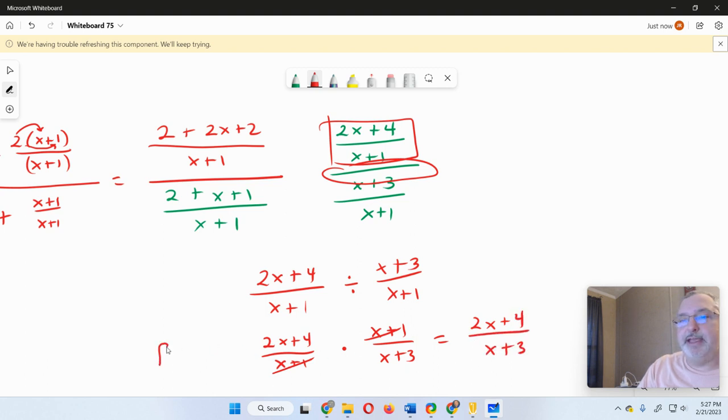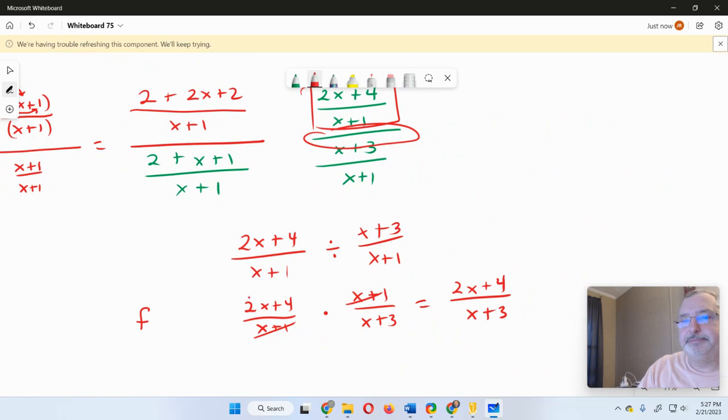Leaving me with 2x plus 4 over x plus 3. And that's going to be my f of g of x. And then we'll have to say that our domain is x cannot equal negative 3. It also cannot equal negative 1. Because you can't have a 0 in the denominator. And when we get done, we definitely can't have a 3 in the denominator. So we can't have those as part of the domain.